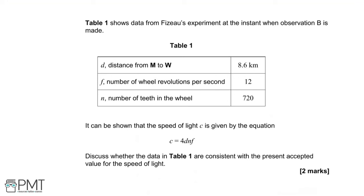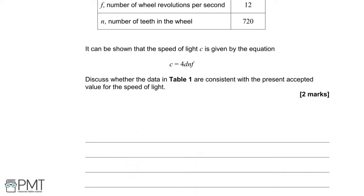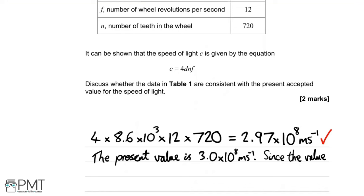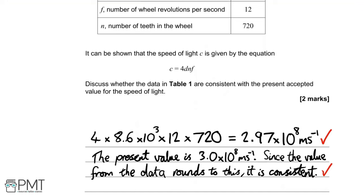Table 1 shows data from Fizeau's experiments at the instance when Observation B is made: distance from M to W is 8.6 km, F (revolutions per second) is 12, and N (number of teeth) is 720. Using C = 4DNF, substituting these values gives 2.97 times 10 to the 8 metres per second, which rounds to 3.0 times 10 to the 8 m/s to two significant figures — consistent with the accepted value. Two marks.